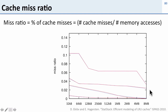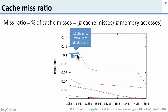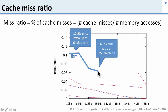Here's a plot of a bunch of miss ratios taken from some research done at Uppsala. Here's one application called LBM. When LBM has a small amount of cache — 64 kilobytes or less — it has a miss ratio over 10%, meaning more than 10% of its memory accesses miss the cache. But as we give LBM more cache, its miss ratio goes down. With 256 kilobytes of cache, the miss ratio goes down to about six and a half percent.